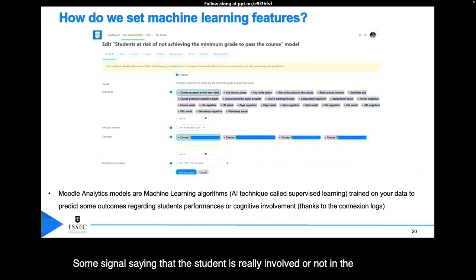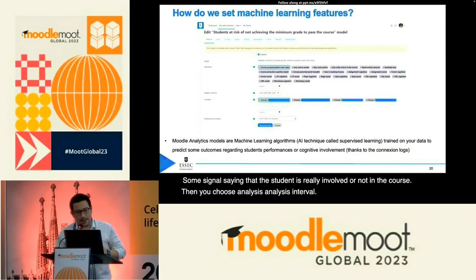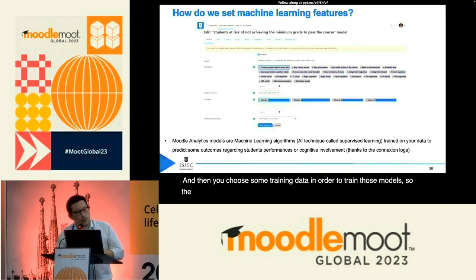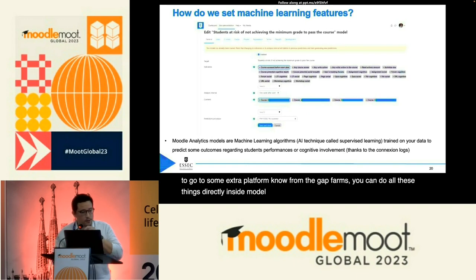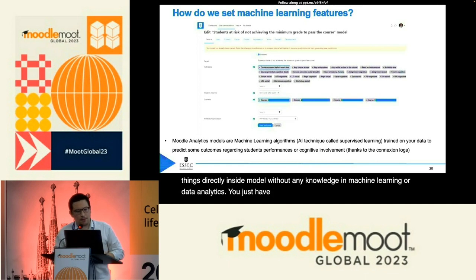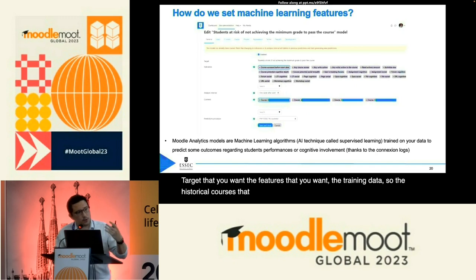Then you choose an analysis interval, and you choose some training data in order to train those models. The good thing is that all these things are done automatically. You don't need to go to some extra platform — you can do all these things directly inside Moodle without any knowledge in machine learning or data analytics. You just have to click, select the target you want, the features you want, the training data from historical courses you had in the past, and make predictions.